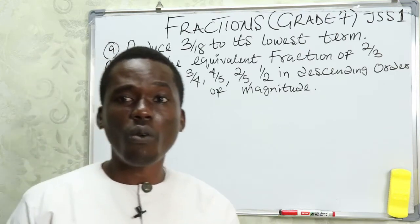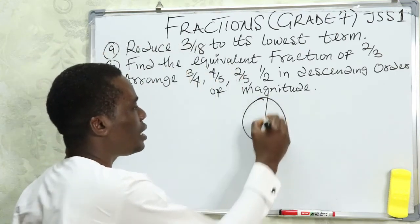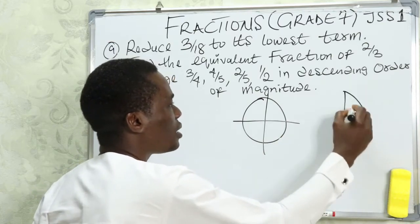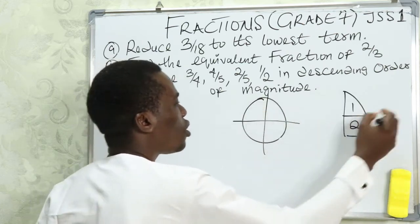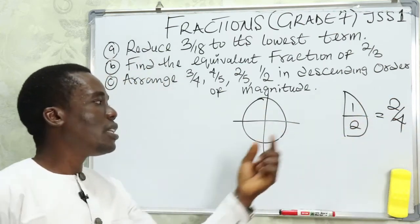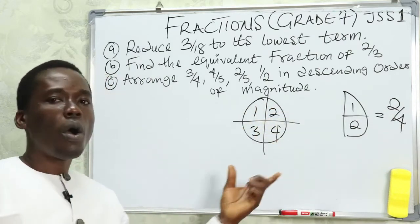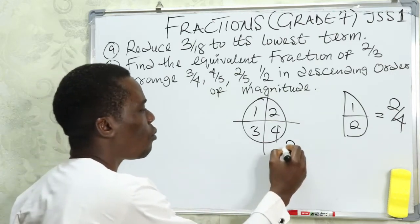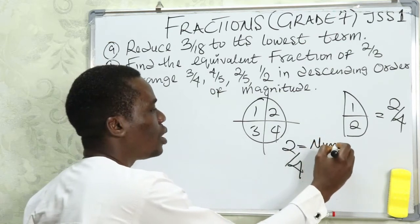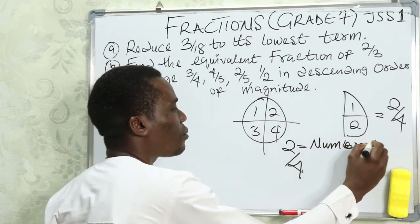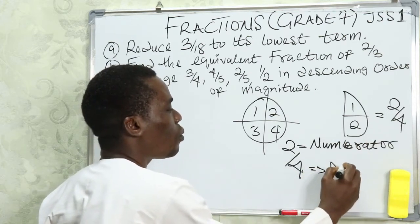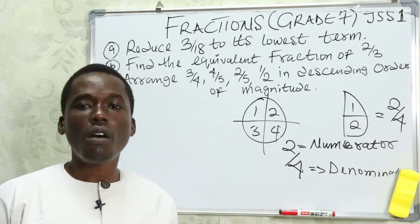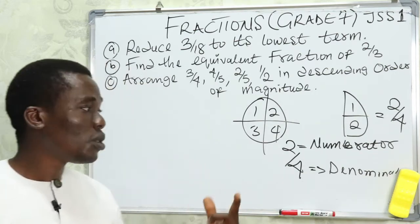Fractions are just a part of a whole. When you are given a whole number and you divide it into four different parts, and you take off two parts out of those four parts, that fraction becomes two over four — because you are taking two parts away from four parts. A fraction is made up of two things: the numerator, which is the number above the fraction line, and the denominator, which is below.